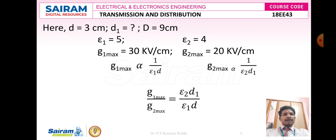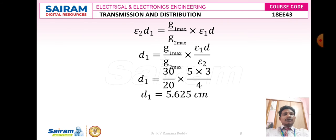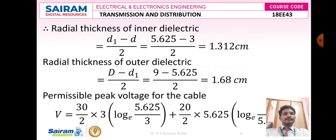Since G_max is directly proportional to 1 by epsilon times d, we have g1_max proportional to 1 by epsilon 1 times d, and g2_max proportional to 1 by epsilon 2 times d1. From this, g1_max divided by g2_max equals epsilon 2 times d1 divided by epsilon 1 times d. Therefore epsilon 2 times d1 equals g1_max divided by g2_max times epsilon 1 times d. So d1 equals 30 divided by 20, times 5 times 3, divided by 4, giving d1 equals 5.625 cm.